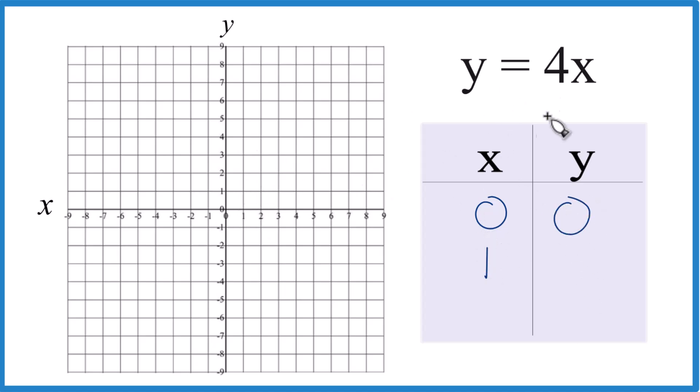How about just 1? 4 times 1, that means y is going to be 4. And how about negative 1? 4 times negative 1 would give us negative 4. So I just made these numbers up here so that they would fit on the graph.